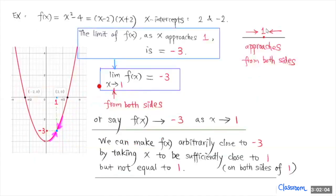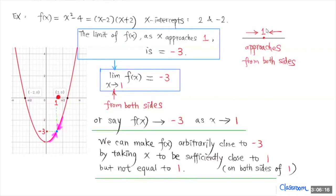We can say the limit of f of x as x approaches negative 3 if we can make f of x arbitrarily close to negative 3 by taking x to be sufficiently close to 1 but not equal to 1. So if we want f of x to be close to negative 3 within a certain range, we can take x close enough to 1, and the corresponding f of x value will be close to negative 3 within the range that you want.